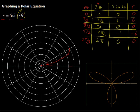So here we have just the beginnings of the graph. What happens next? When the angle is pi over 3 radians, the radius is back to 0.